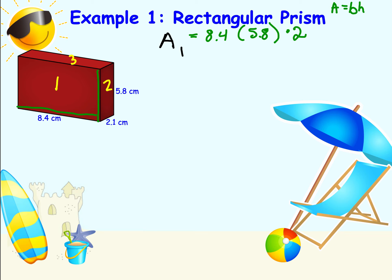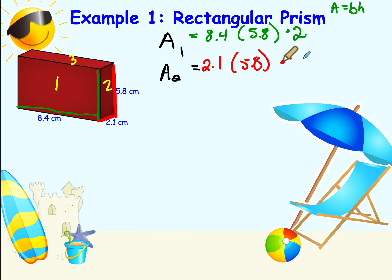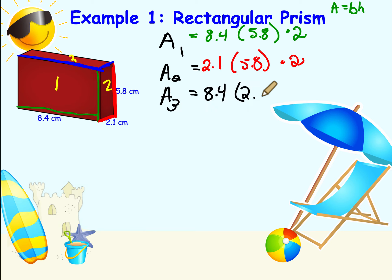For rectangle two, its base is 2.1 and its height is 5.8, and there are two of them. For rectangle three, its base is 8.4 and its height is 2.1, and there are two of them as well.